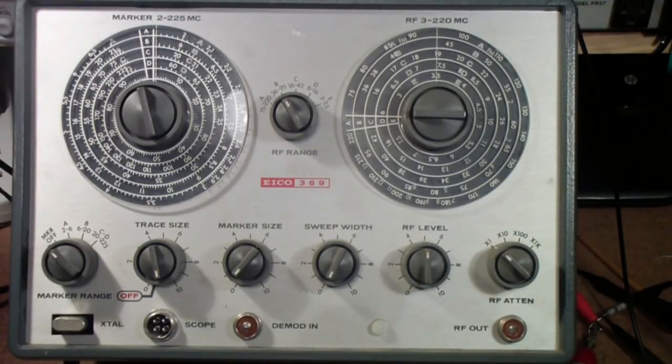What you see is an ICO model 369 sweep generator. It's a kind of artifact of the 1960s. These were used to align primarily television sets, although they were also used to sweep align FM radios. They're still used for the latter, but of course the sweep alignment of TV sets is a thing of the past.